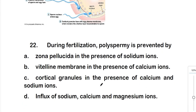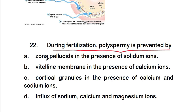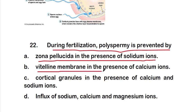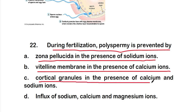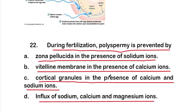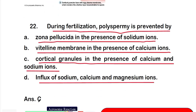Question 22: during fertilization, polyspermy is prevented by option A: zona pellucida in the presence of sodium; option B: vitelline membrane in the presence of calcium ions; option C: cortical granules in the presence of calcium and sodium ions; or option D: influx of sodium, calcium, and magnesium ions. The right answer is option C — cortical granules in the presence of calcium and sodium ions prevent polyspermy.